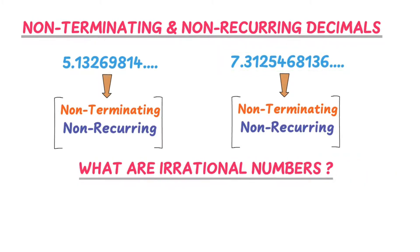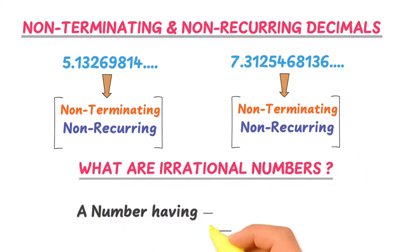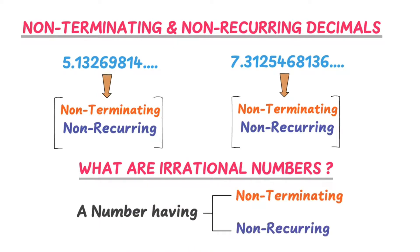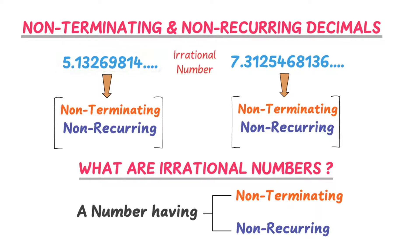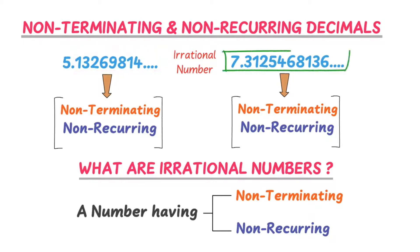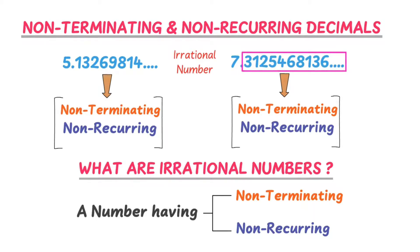Now, what are irrational numbers? A number having a non-terminating and non-recurring decimal is known as an irrational number. For instance, 5.13269814 is an irrational number because its decimal part is non-terminating and non-recurring. Also, 7.3125468136 is an irrational number for the same reason.